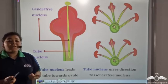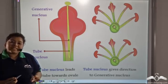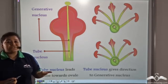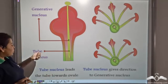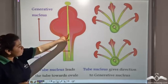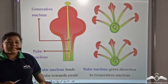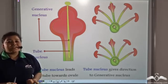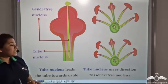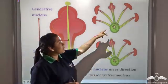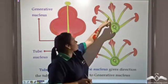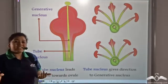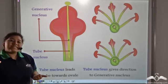We had also talked about two nuclei present in the pollen grain: the tube nucleus and the generative nucleus. The tube nucleus leads this tube formation towards the ovule, and hence it is known as the tube nucleus. Another function of the tube nucleus is that it gives direction to the generative nucleus towards the ovule.